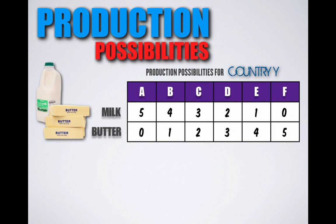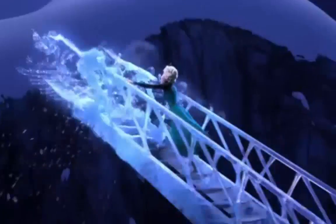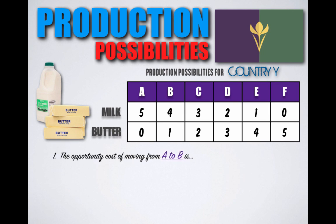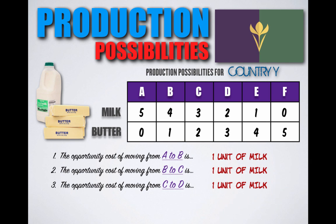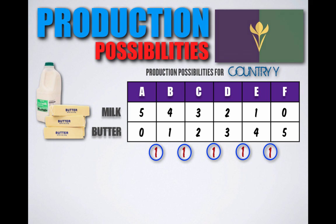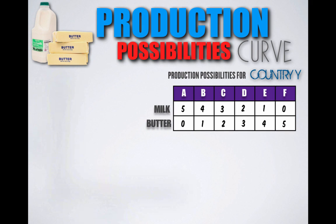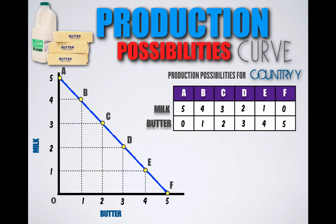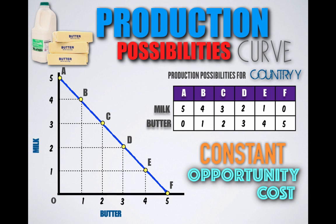In Country Y — let's call it Arendelle — the opportunity cost of moving from Point A to B is one unit of milk, from B to C is one unit of milk, and from C to D is one unit of milk. As it shifts production from Combination A towards F, and vice versa, the opportunity cost is constant — always one unit at every production possibility. Plotting these points onto a graph, we see that Arendelle's PPC is a straight negatively sloped curve, implying the country is experiencing constant opportunity costs.